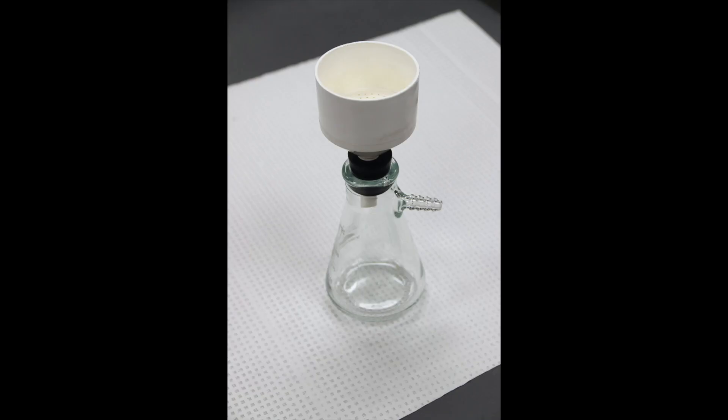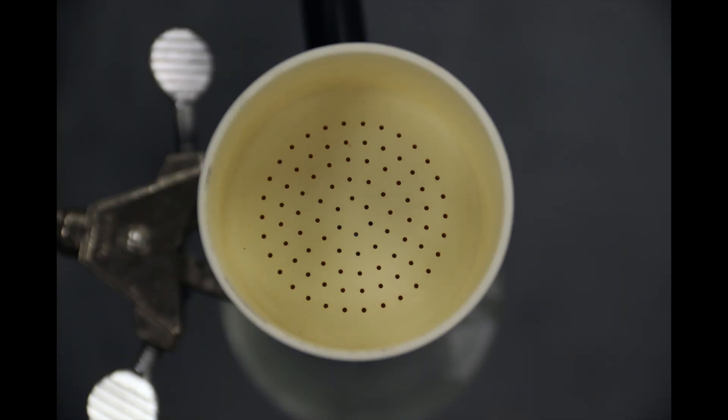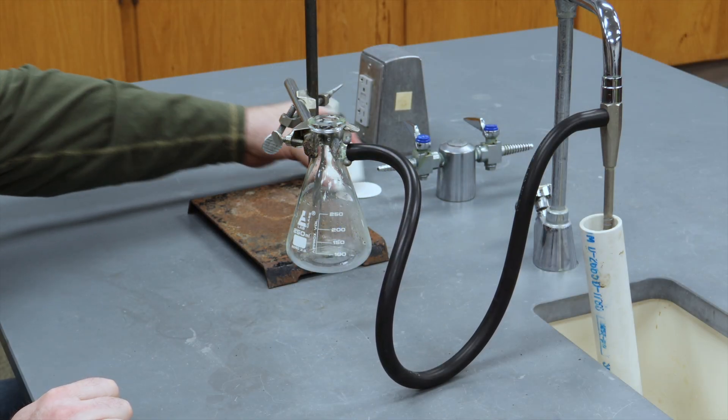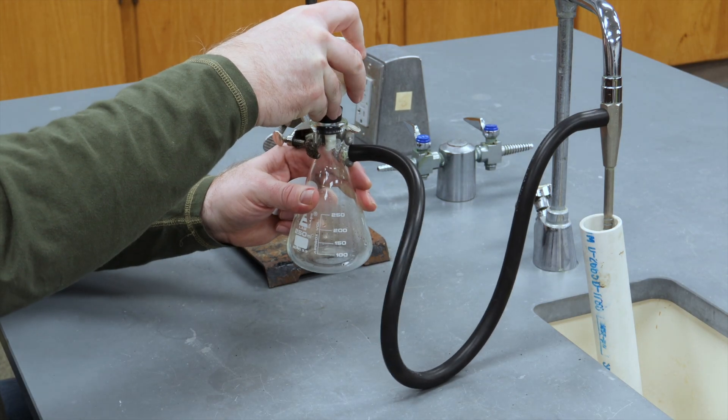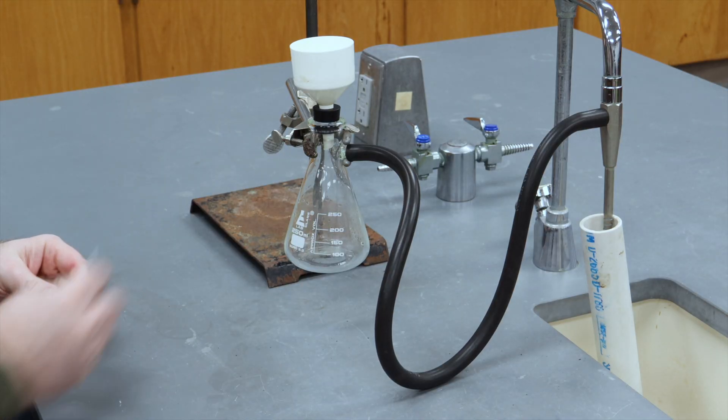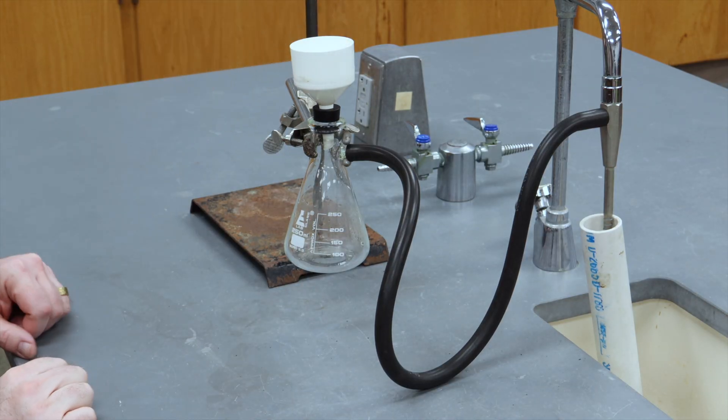The Buechner funnel has holes in it that allow liquid and air to flow through it easily. However, these holes are big enough to allow your solid compound to flow through as well. So, we'll need to use a perfectly sized filter paper to cover these holes.